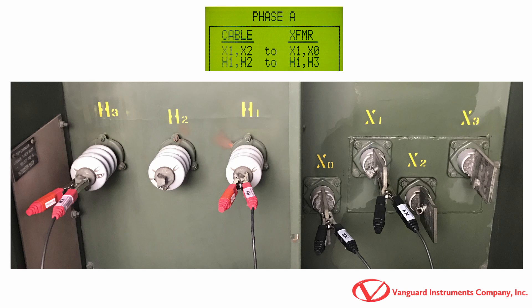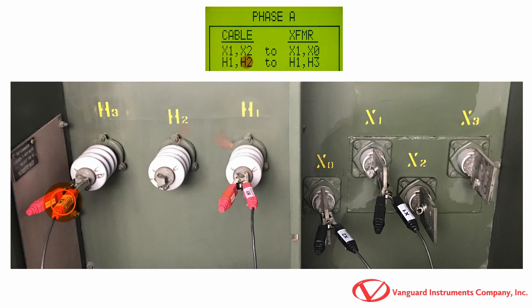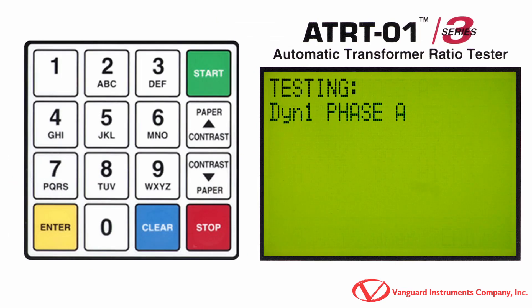For our example, we'll connect the unit's X1 cable to the transformer's X1 terminal and the unit's X2 cable to the transformer's X0 terminal. Next, we'll connect the unit's H1 cable to the transformer's H1 terminal and the unit's H2 cable to the transformer's H3 terminal. Now press the Start key to perform the test.